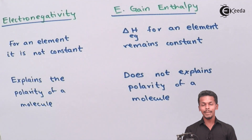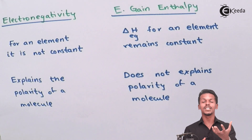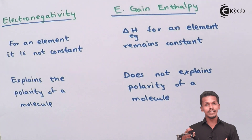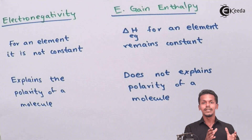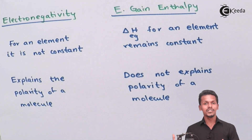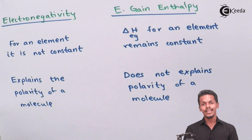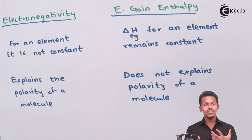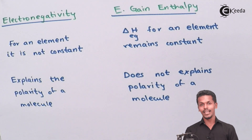But for electron gain enthalpy, it does not depend on the other atom because it is associated with a particular atom in a gaseous state that simply accepts an electron. The enthalpy change observed during that electron acceptance defines the electron gain enthalpy for that specific atom, and it remains constant. ΔH_eg remains constant for a particular atom — whether chlorine, fluorine, or any other — because it deals only with that single atom.